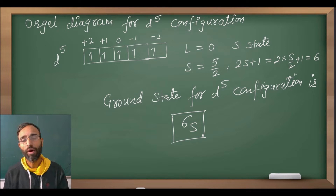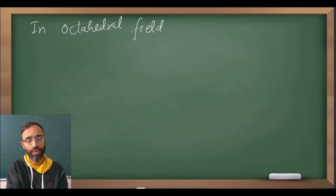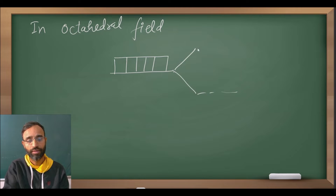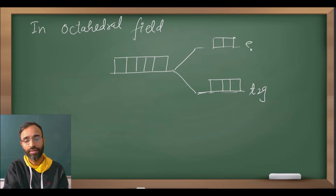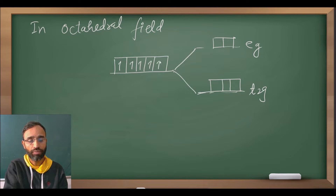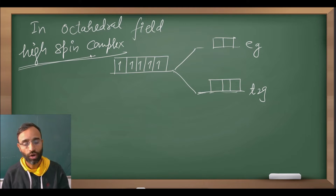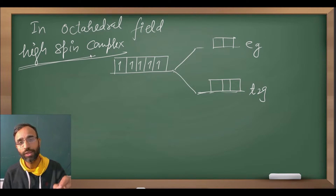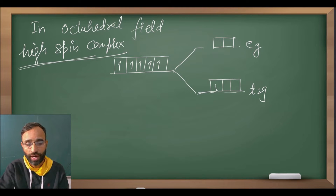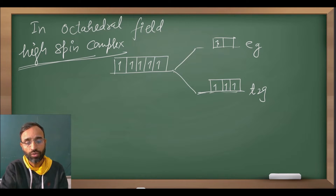Now if we have an octahedral field, the d orbitals split into T2G and EG. We have 5 electrons, and in a high spin complex — because Orgel diagrams are applicable to high spin complexes only — there are 3 electrons in T2G and 2 electrons in EG.